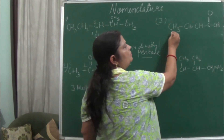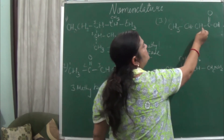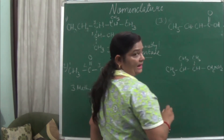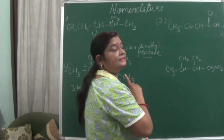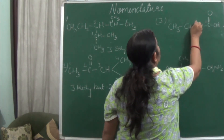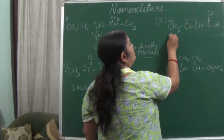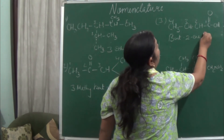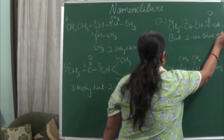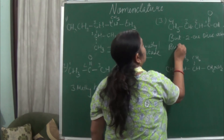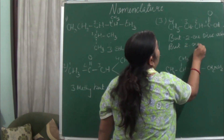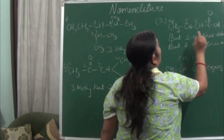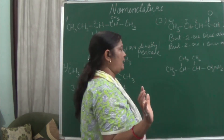Next example: CH₃–CH=CH–COOH. Here we have a carboxylic group. The priority table is given in the NCERT. So we start counting from the carboxylic end: 1, 2, 3, 4. The name will be but-2-enoic acid. You can also write bute-2-ene-1-oic acid, but when the number is 1 there is no need to write it, so but-2-enoic acid is preferred.